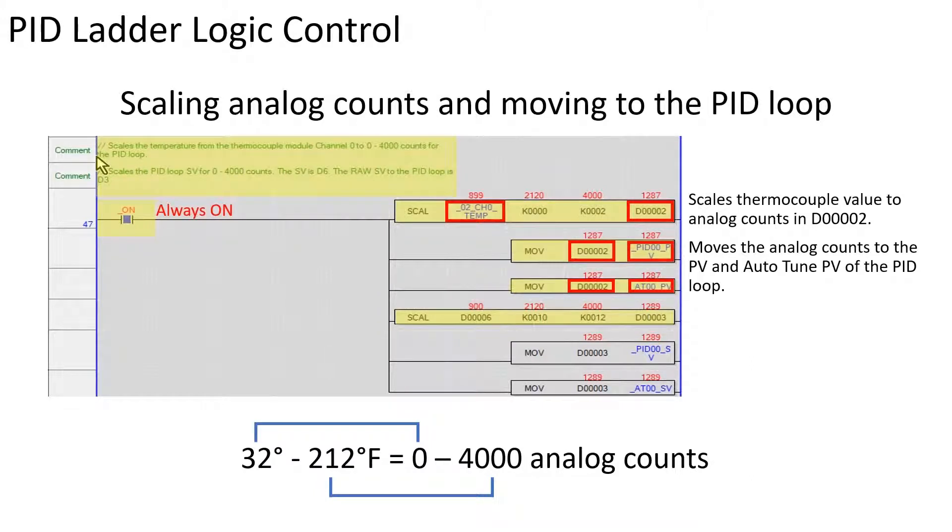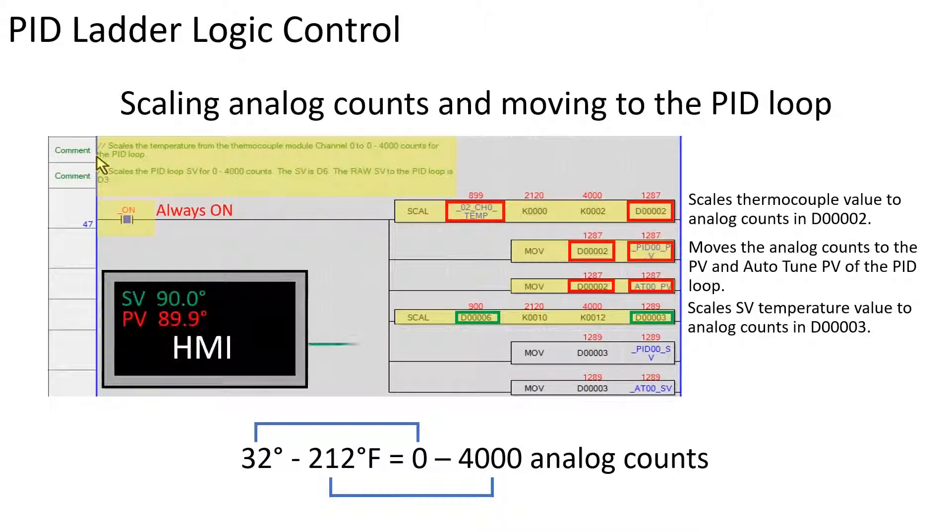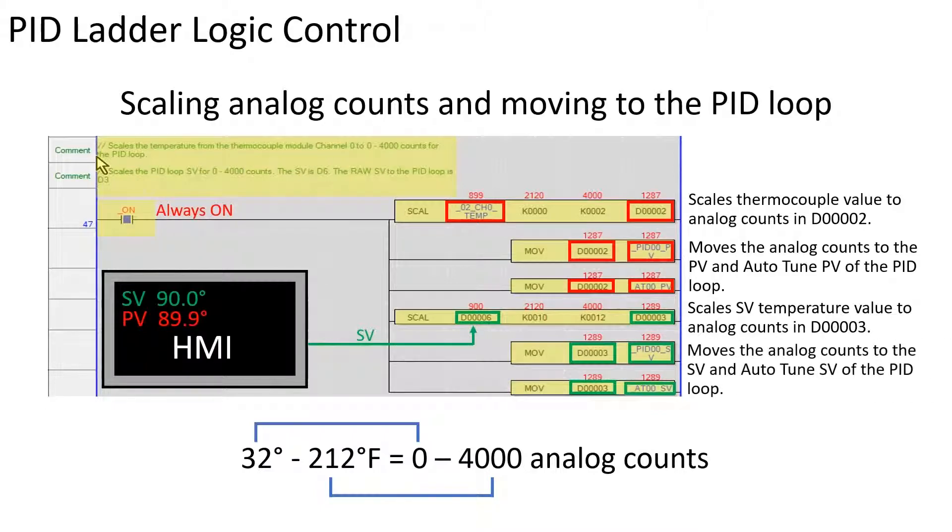The next instruction scales an SV value of 90 degrees in memory location D6 to location D3. D6 is the location an HMI would write to when entering a set point value. The scale data in location D3 is moved to the PID operation SV and autotune SV.